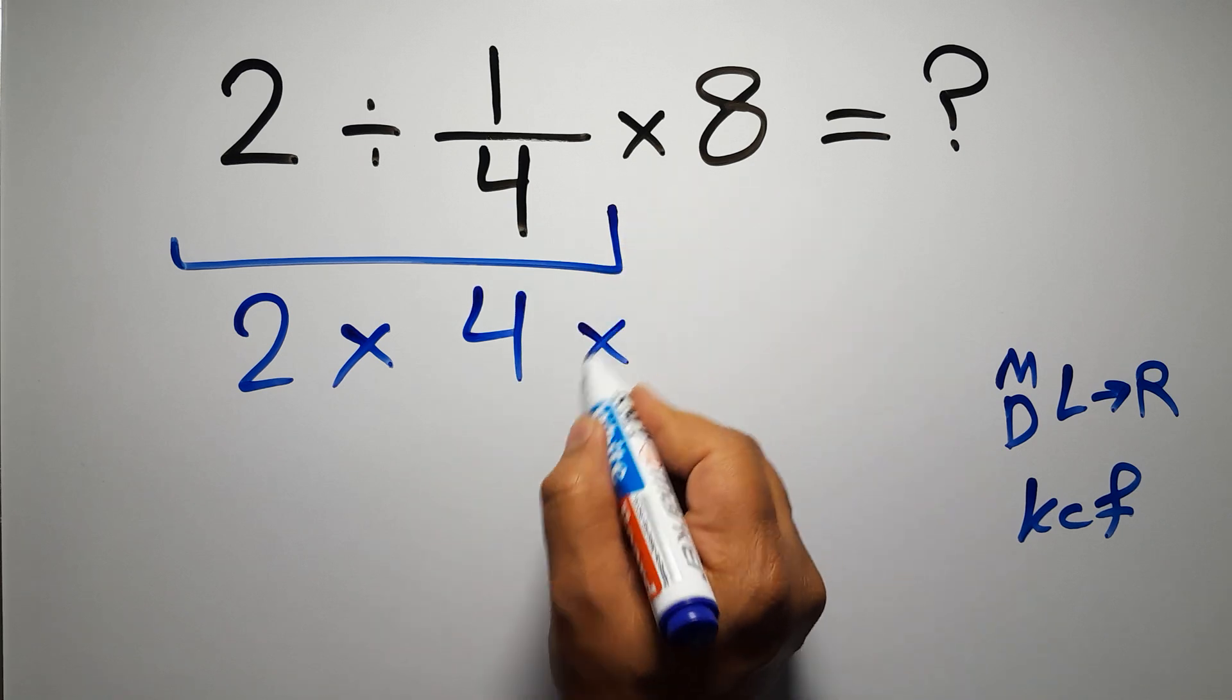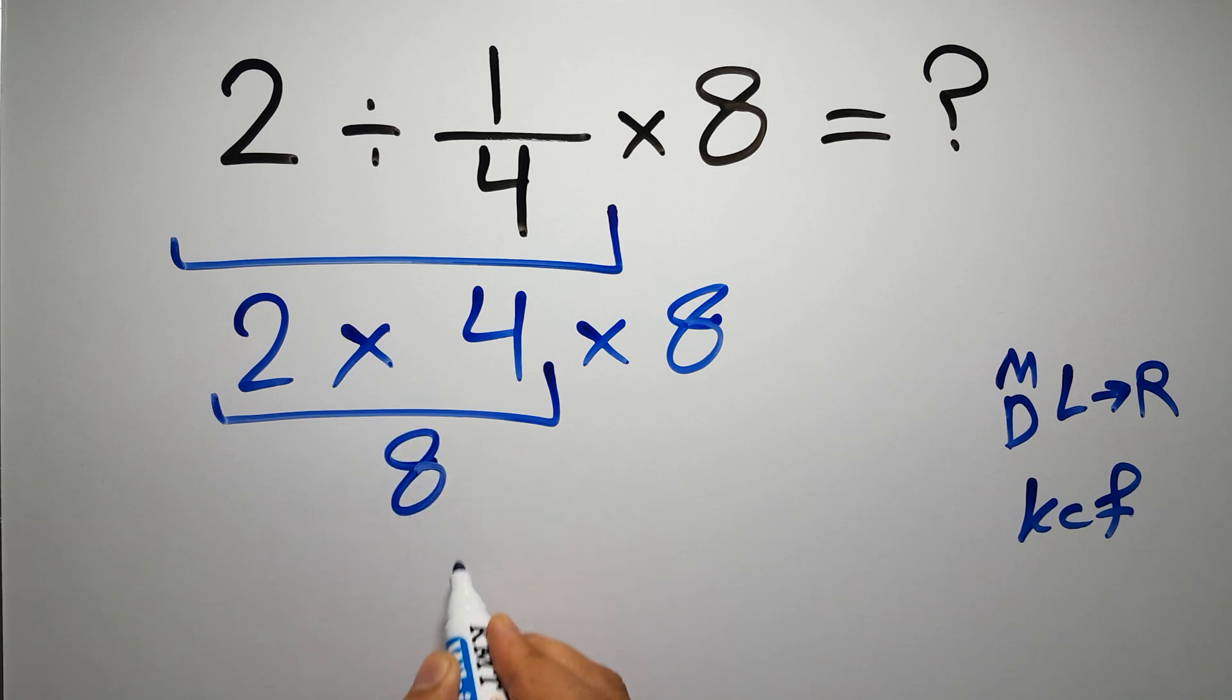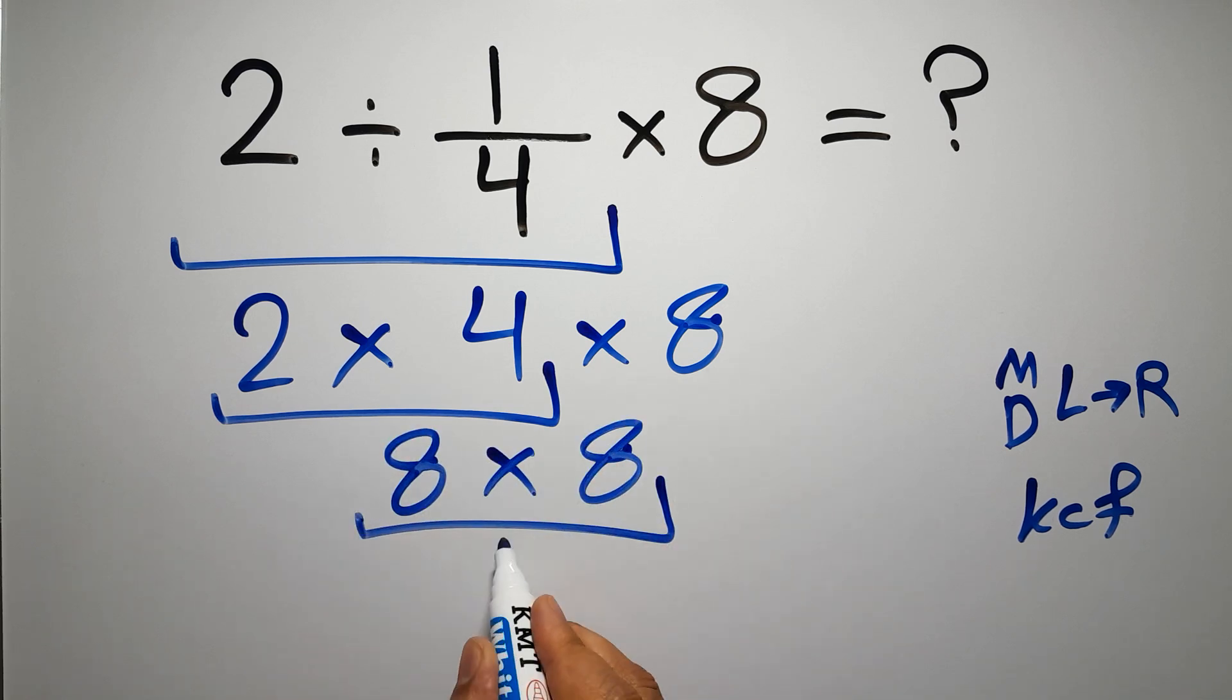And here we have times 8. 2 times 4 gives us 8, and 8 times 8 is just 64.